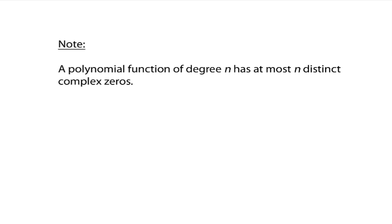Here's our last note: a polynomial function of degree n has at most n distinct complex zeros. A third-degree polynomial like we just had could have three different zeros — and it did: positive 3i, negative 3i, and negative 2. A 5th degree polynomial can have at most five different zeros. When we say complex zeros, that includes both real and imaginary numbers. A 57th degree polynomial could have at most 57 different zeros. You could have less, but the most you can have equals the degree of the polynomial.